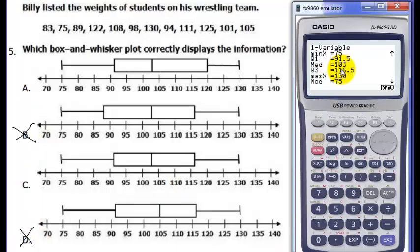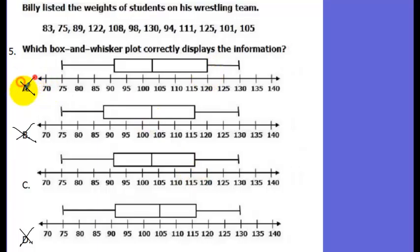Next, what is our upper quartile? 116.5. This is not equal to 116.5. Alright. This one is. So we can now cross out option A. Therefore, the answer is letter C.